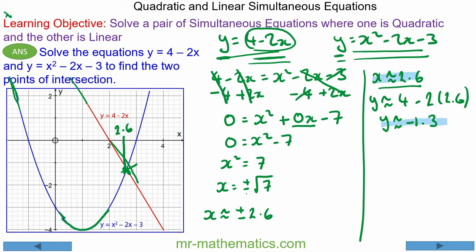The other solution is when x is approximately negative 2.6, so y will be approximately 4 minus 2 lots of negative 2.6. Y is approximately 9.3, and that would be your other solution.